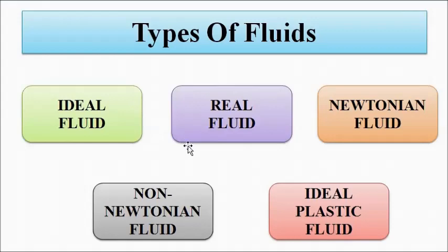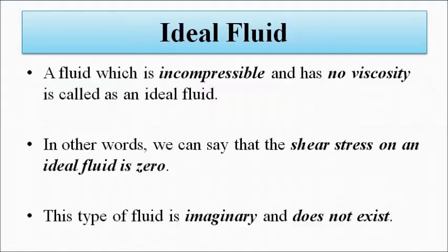We can categorize fluids as ideal fluid, real fluid, Newtonian fluid, non-Newtonian fluid, and ideal plastic fluid. First is ideal fluid. An ideal fluid is one which is incompressible and has no viscosity. No viscosity means no shear stress — the shear stress on an ideal fluid is zero. It means the mass per unit volume is fixed; it cannot be compressed, the density cannot be changed.